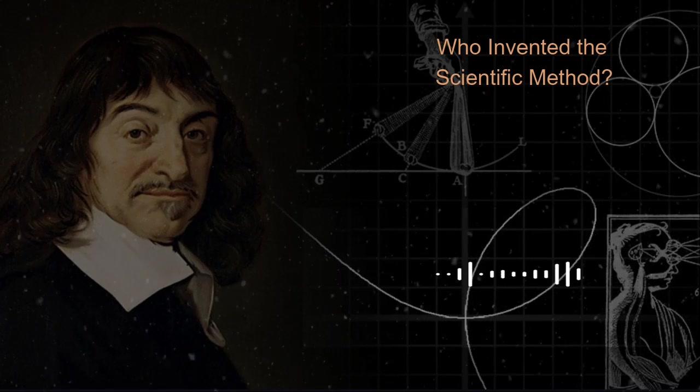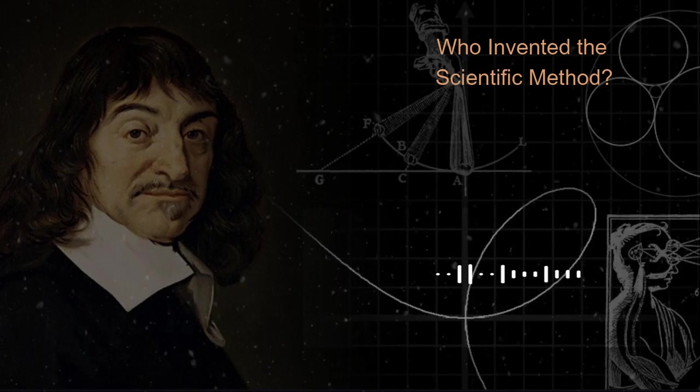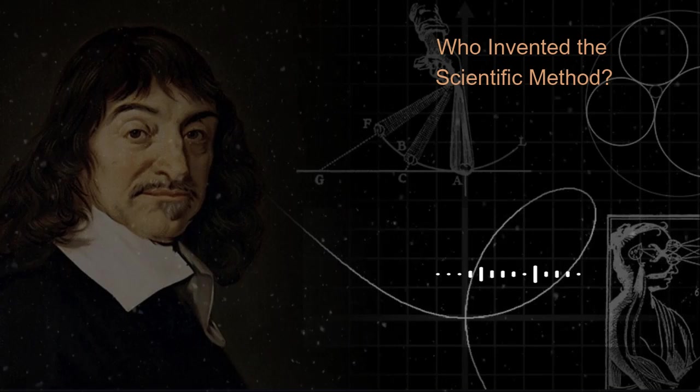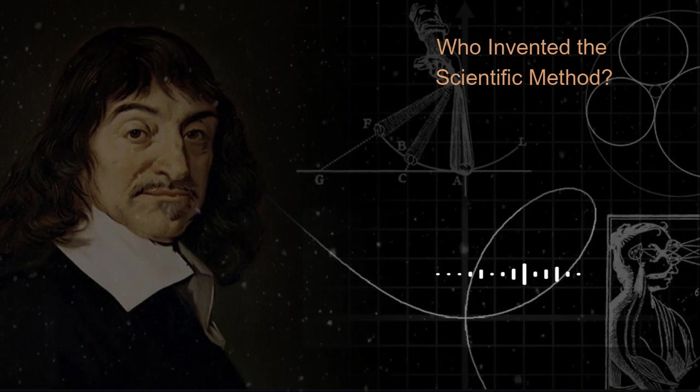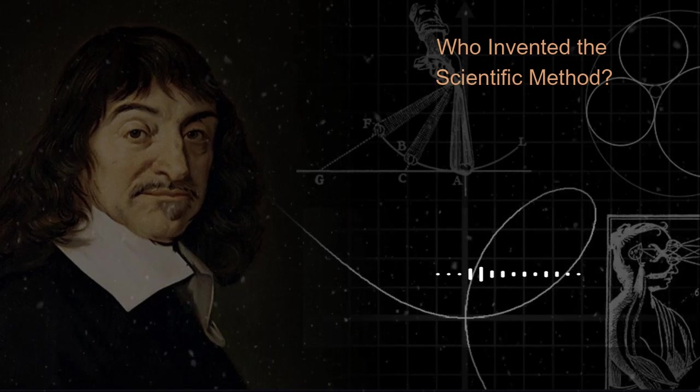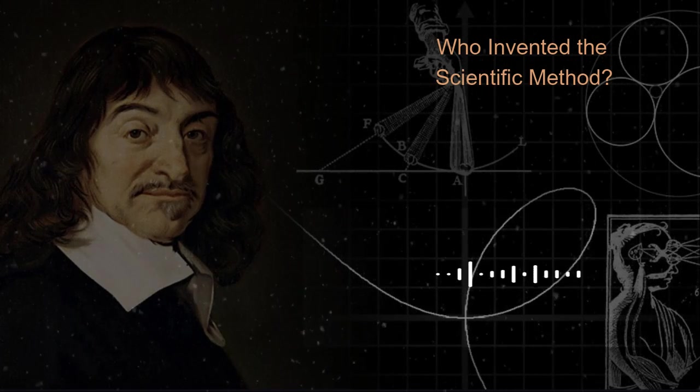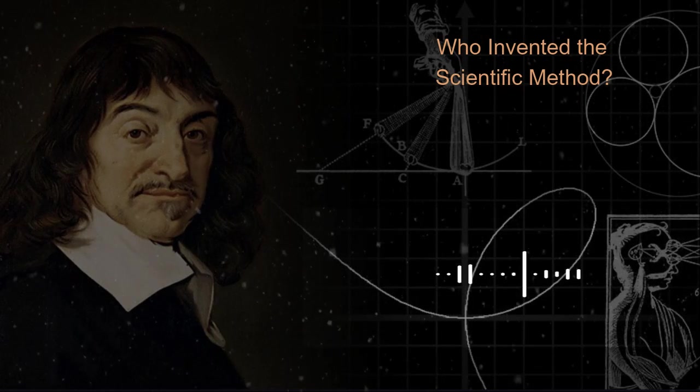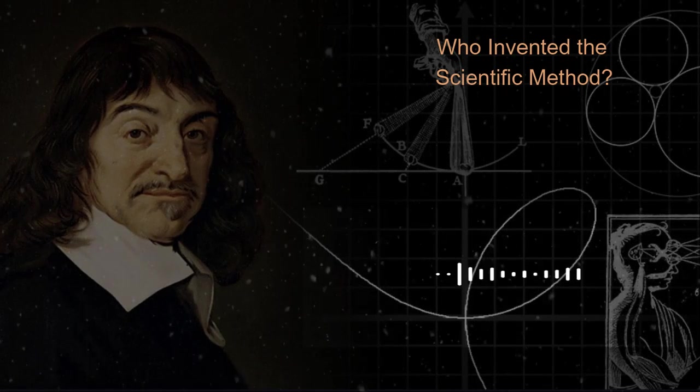Newton and the Modern Scientific Method: Any discussion about who invented the scientific method must include Isaac Newton as the scientist who refined the process into one that we use today. He was the first to realize that scientific discovery needed both induction and deduction, a revolution in the scientific method that took science into the modern age.